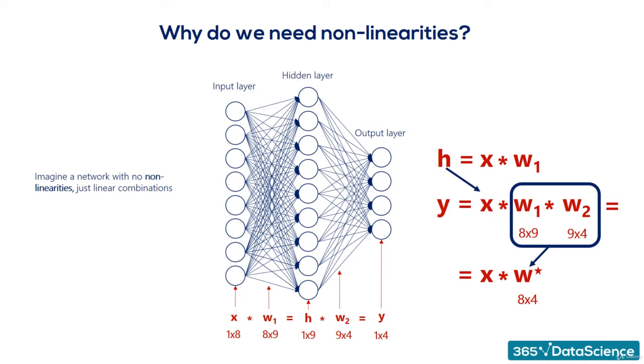Well, then, our deep net can be simplified into a linear model, which looks this way. Y equals x times W star.